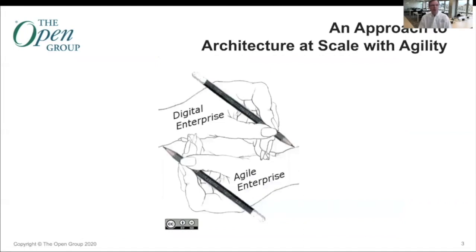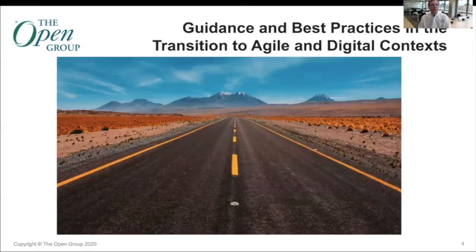The Open Agile Architecture standard provides an approach to architect at scale with agility. As shown in this diagram, digital and agile transformation go hand in hand. The focus on the technology required for digital transformation is not enough — organizational agility is key. The cultural dynamics of a company are just as important as the technology. Tim Fantane and his co-authors show that cutting edge technology and talent are not enough; companies must break down organizational and cultural barriers that stand in the way. The OAA standard provides guidance and best practices for enterprise architects seeking to transition to agile and digital contexts.